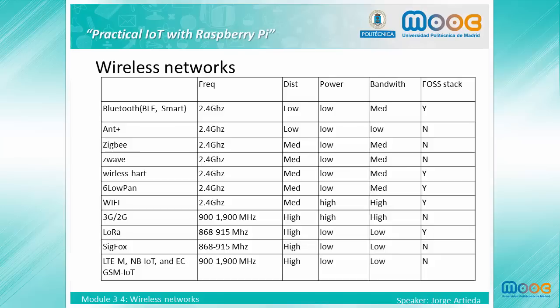Here we can see a comparison between common wireless protocols in the Internet of Things world. Bluetooth provides low-range communication with medium bandwidth and is very widespread for applications like audio or wearables. Ant Plus is a proprietary protocol very popular for sport wearables. Zigbee is a medium-range protocol oriented for home automation devices, and Z-Wave is the main Zigbee competitor but not so widespread.